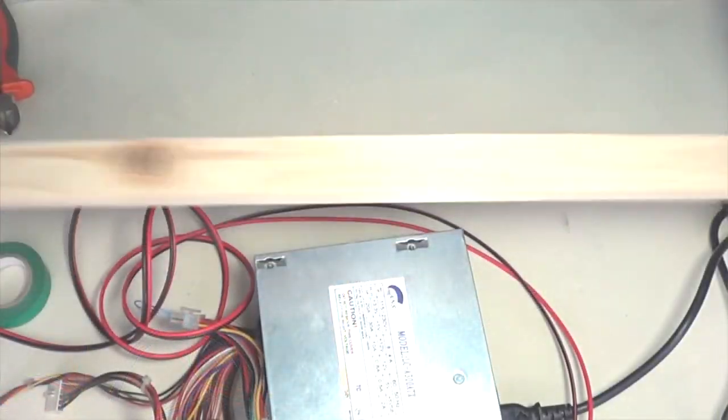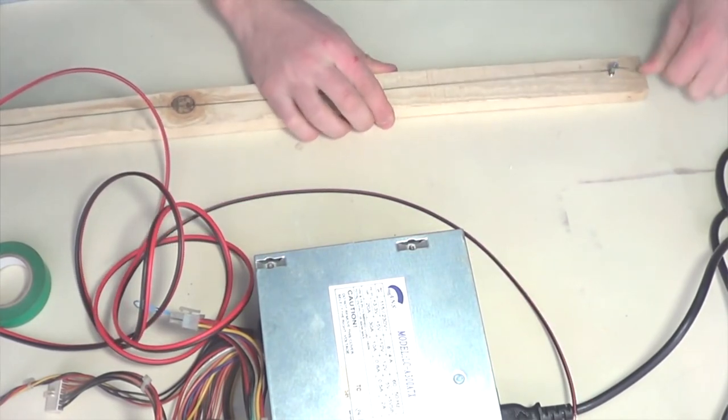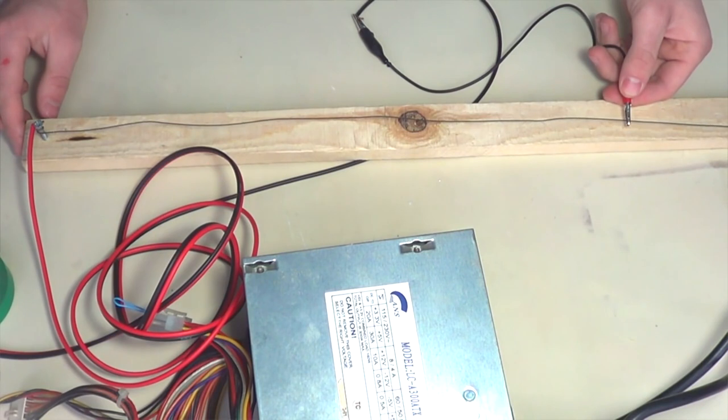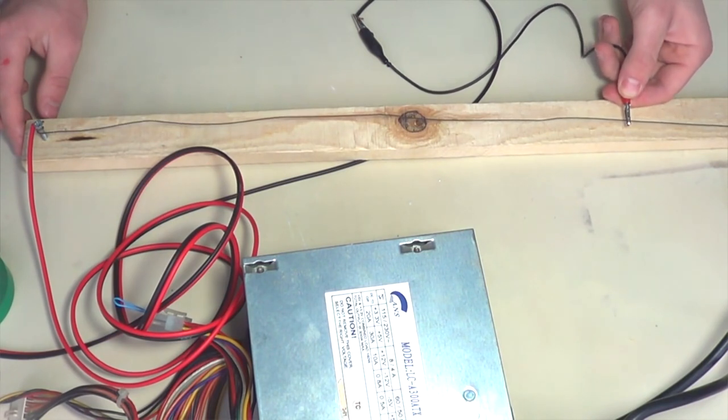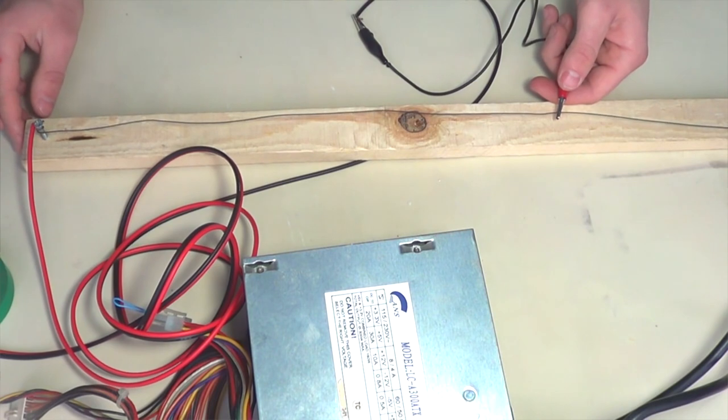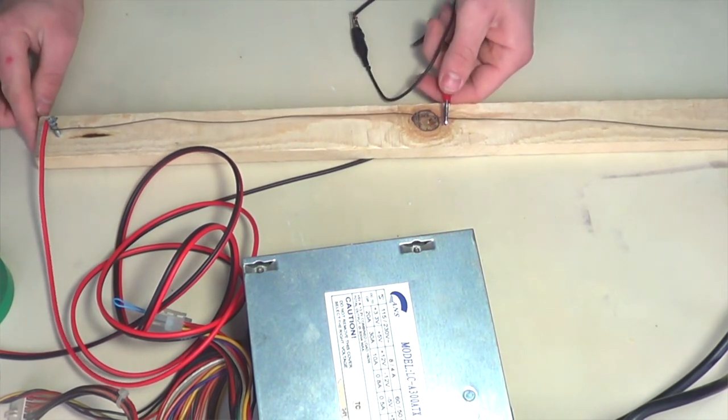Well, now is the most important moment. We need to choose the correct length of the nichrome wire. There is a formula for calculating the correct length and thickness of the wire, but it also may be done by a rule of thumb. We connect plus to one end and approach with a minus from the other end, until the wire starts becoming red, otherwise you take a risk of overloading the power supply and overheating the wire.